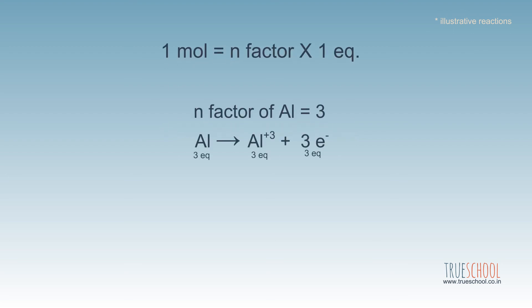For example, Al, if its n-factor is three, one mole of aluminum will be three equivalents. So one mole of Al is three equivalent of any other species. Let's take H for example. Hence, one mole is equivalent to three moles of hydrogen.